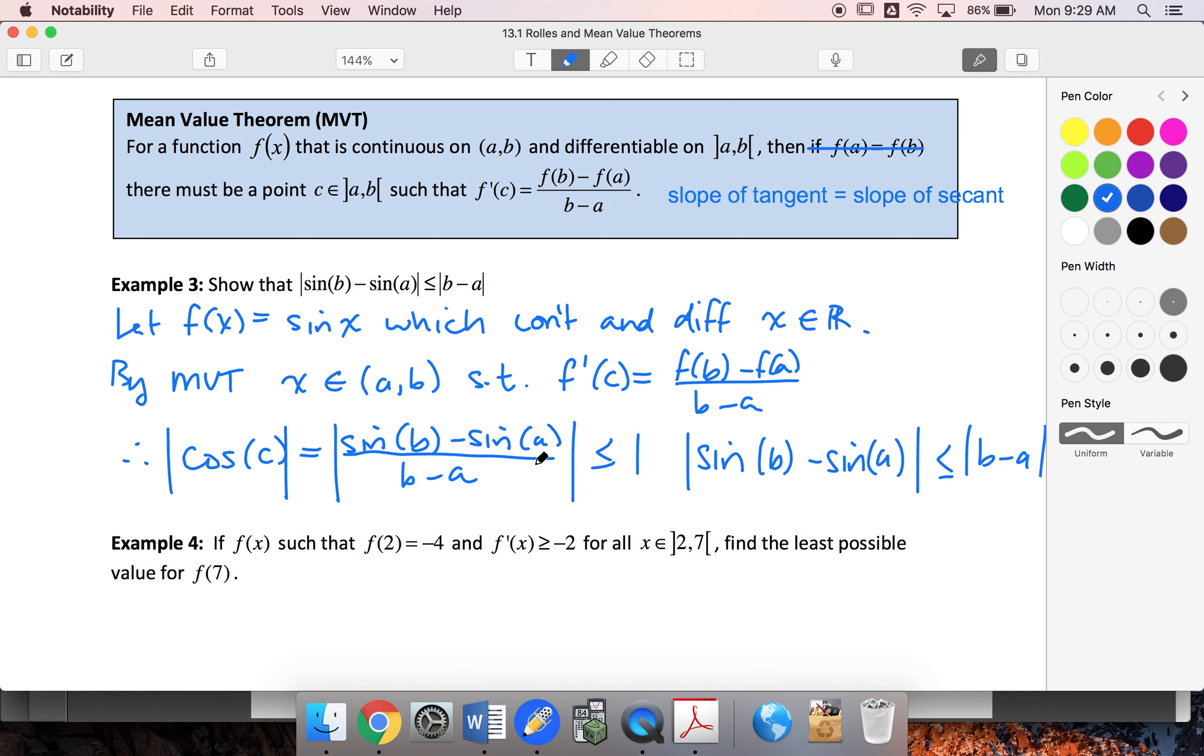I was hesitating because I was thinking about putting 0 on the left-hand side, saying 0 ≤ this ≤ this. But in that case, when I multiply by (b - a), I would still have 0 here, and that doesn't matter because this will still be ≤ |b - a|.